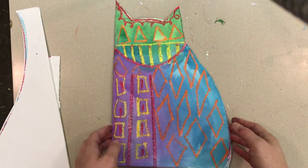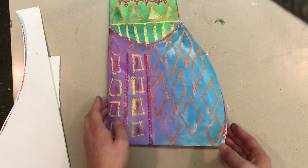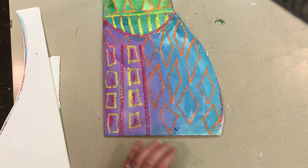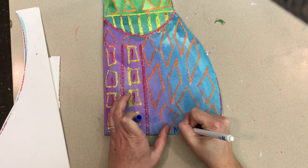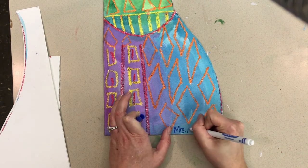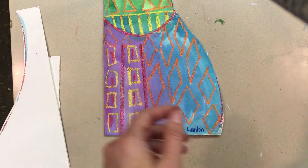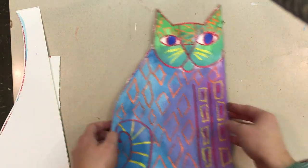So after you're done applying pressure and making sure that your cat is glued, you are going to use a marker, not an oil pastel, to write your name and teacher code on the back bottom of your animal. I chose blue because my paint was blue. And now we're all finished.